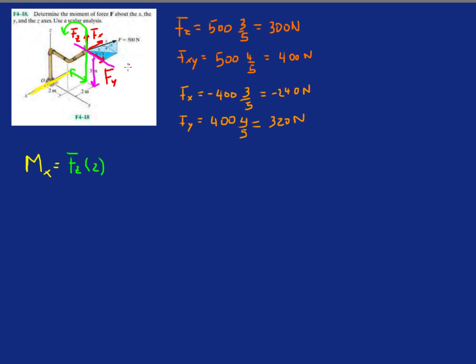So now again, follow the force FY with your fingers of the right hand, and you're going to curl them towards x, and now you should be gripping the x-axis, like if you're gripping a rod, and your thumb should be pointing in the negative x direction. So that tells us that we have a negative moment by FY, and then the distance we needed was three.